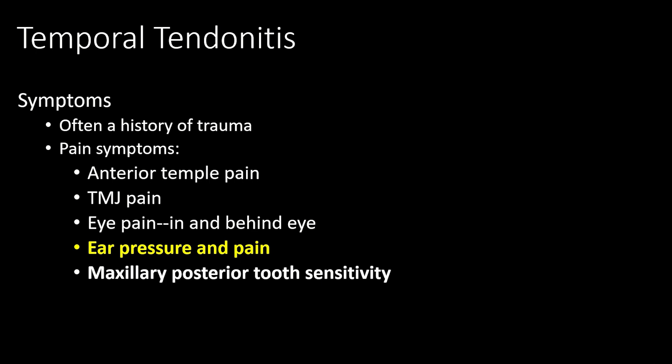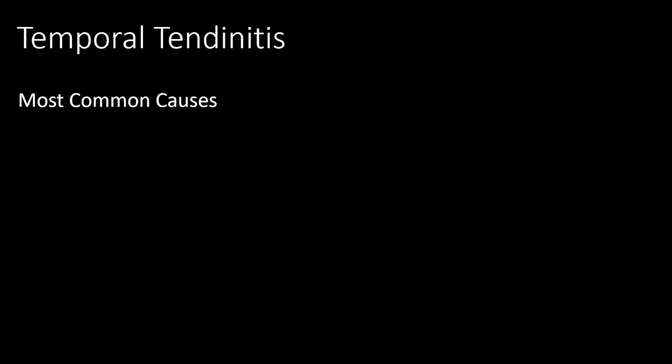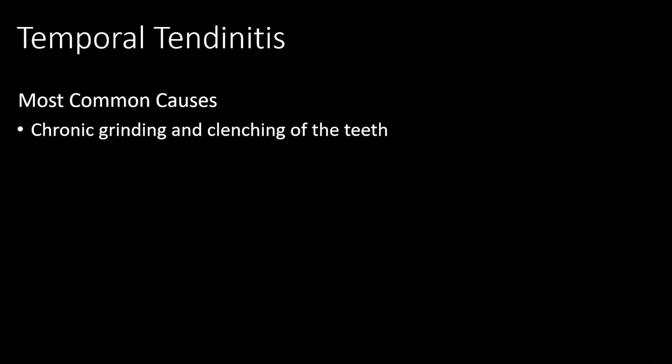Maxillary or upper posterior tooth sensitivity, even if the tooth is missing — just like phantom limb pain, you can have phantom tooth pain because the nerve from the nervous system is still going to the jaw. Common causes of temporal tendonitis include grinding and clenching of your teeth. People often have this disorder and don't realize it's developing — it can happen over a period of months to years, and generally it'll become worse if they go through a stressful situation.